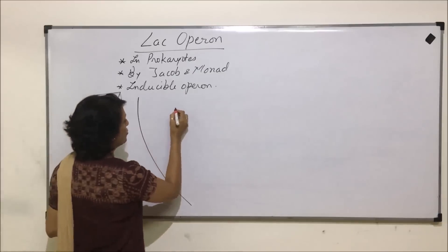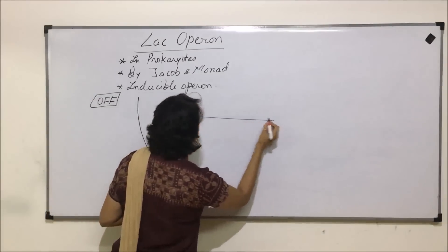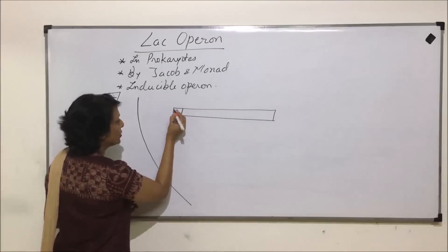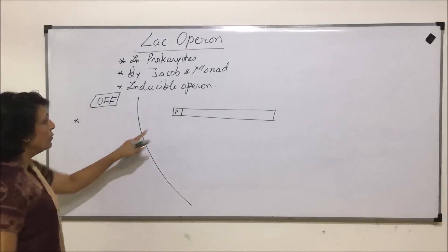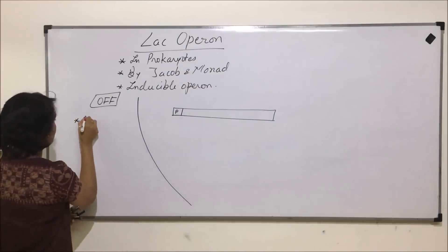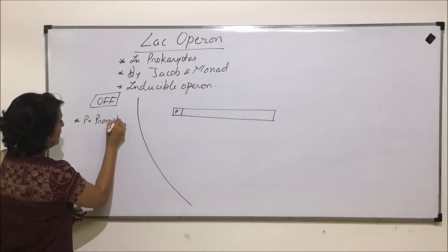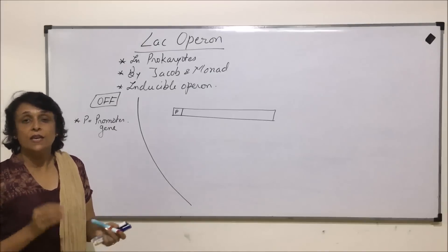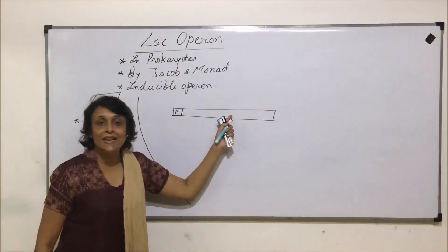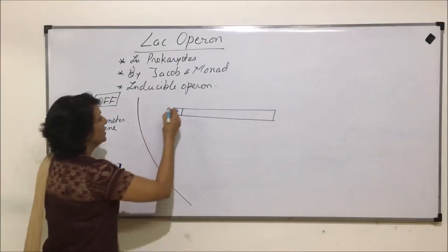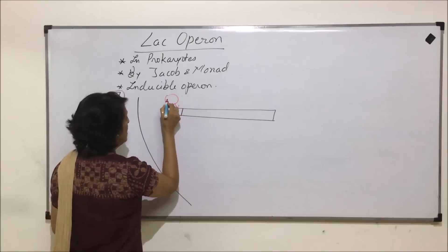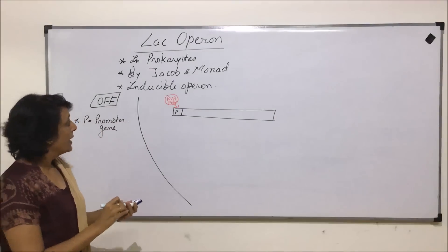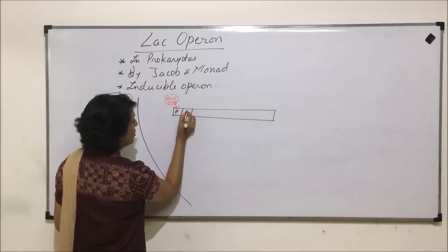Suppose this is the bacterial membrane and inside there is this operon working. Let us draw this operon and understand what exactly is present here and how these things are going to get expressed. There is a promoter gene — the site where our RNA polymerase is going to attach so that this DNA piece will get transcribed.